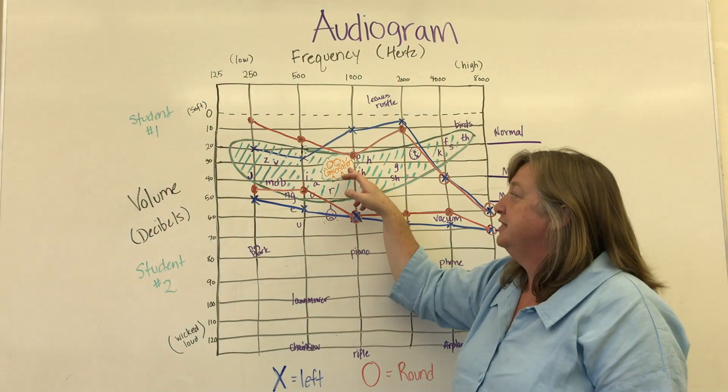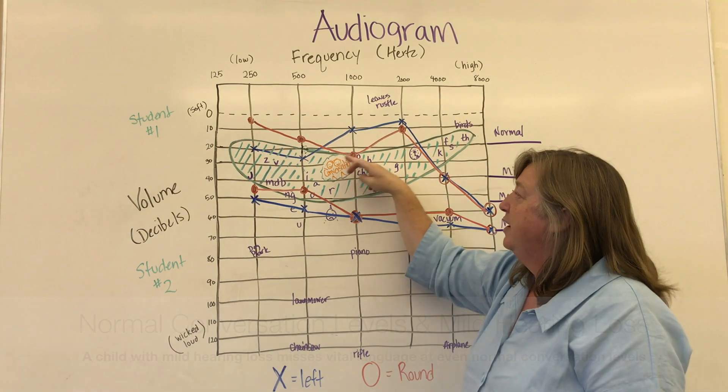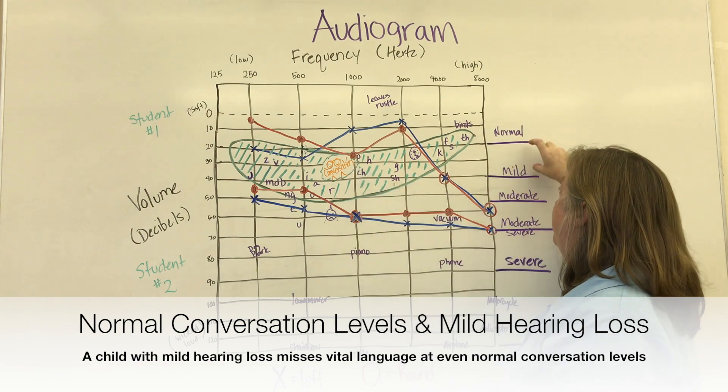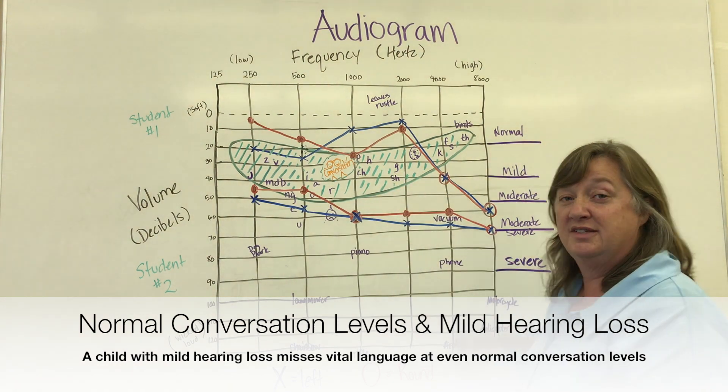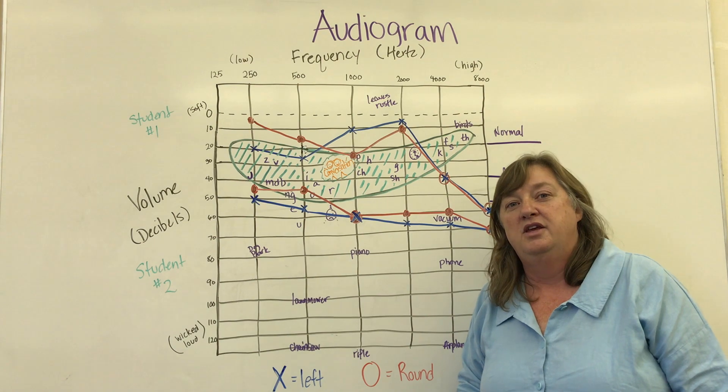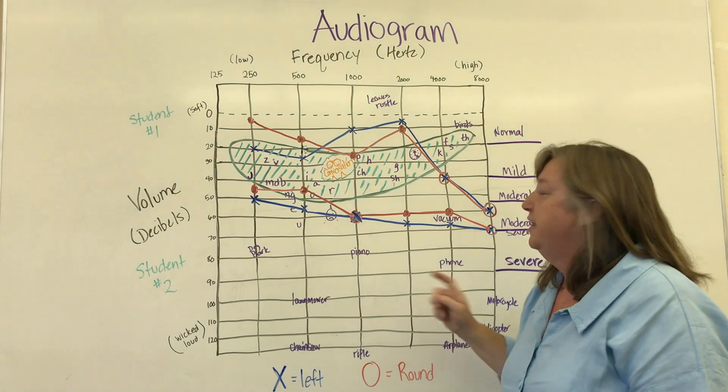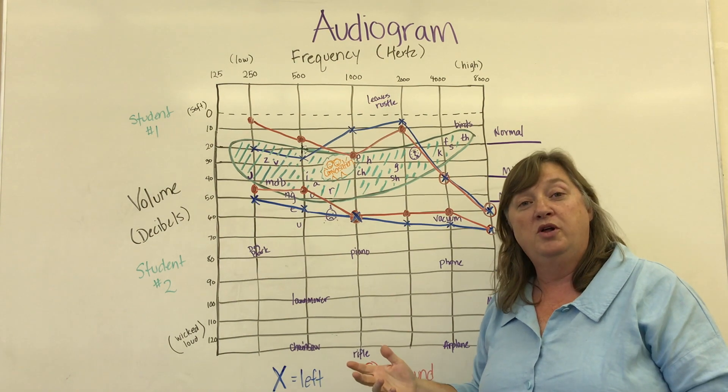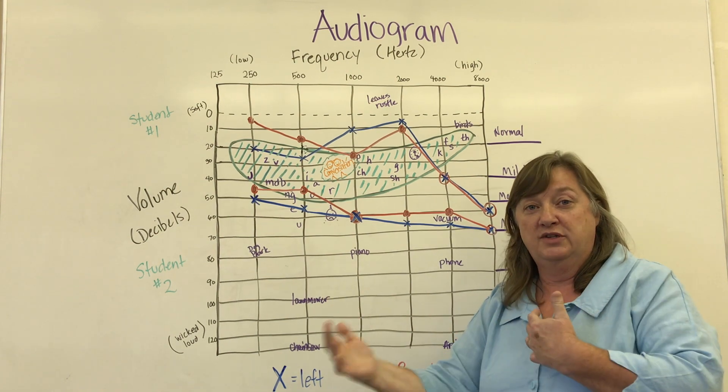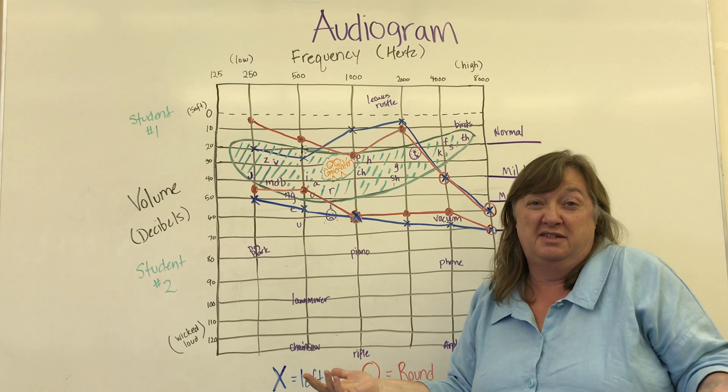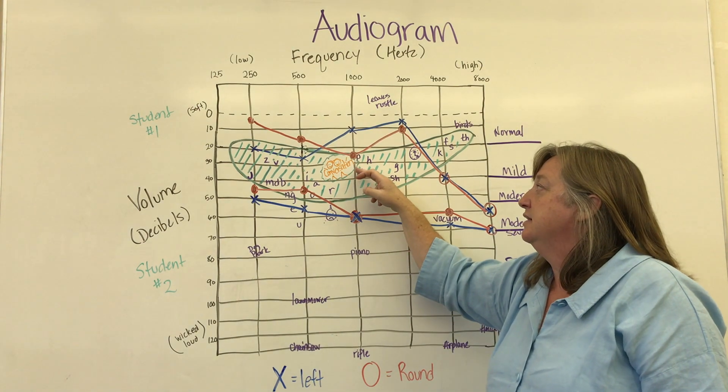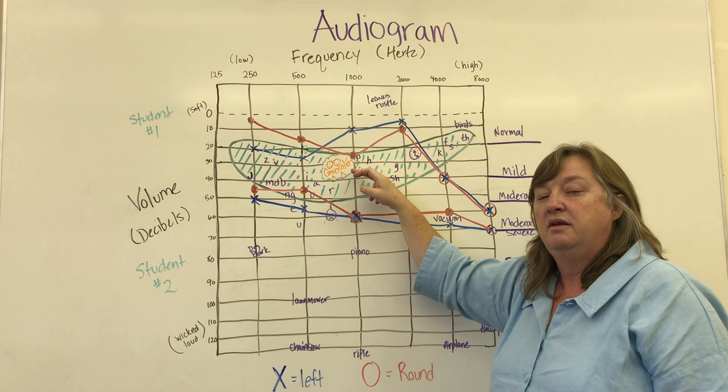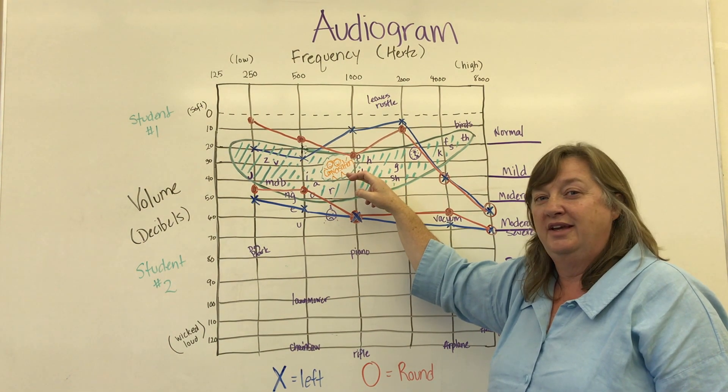Normal conversation happens right around here in the middle of the speech banana. So it really happens in this mild hearing loss category. So think about that. Think about your student sitting in a classroom in normal range of conversation, which is what, three feet? That's where this is. If their hearing is below that, they're not hearing it. If there's background noise, they're not hearing it.